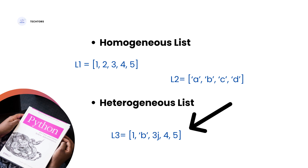Next, L3. If you look at L3, there is an integer data type, a string data type, and a complex data type — there are multiple different data types. We store them all together, so this is a heterogeneous list.